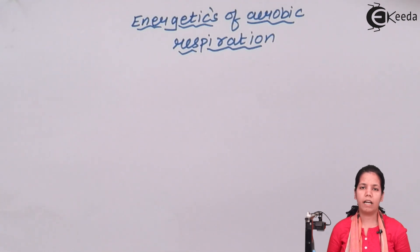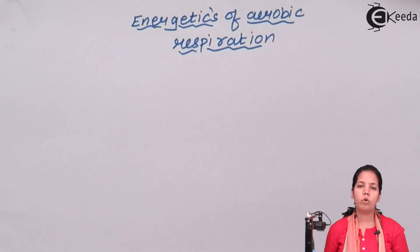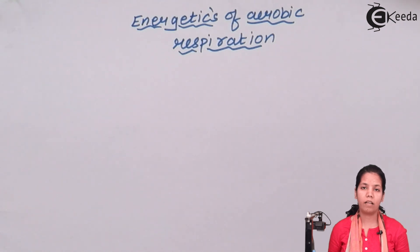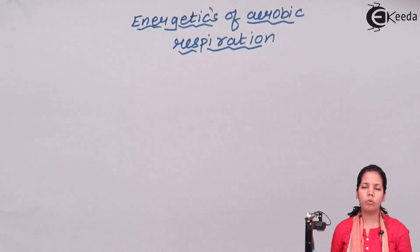Let's first start with glycolysis. Glycolysis is the process in which one molecule of glucose undergoes a series of 11-step reactions in the glycolytic cycle, finally forming two molecules of pyruvic acid or two pyruvate molecules.